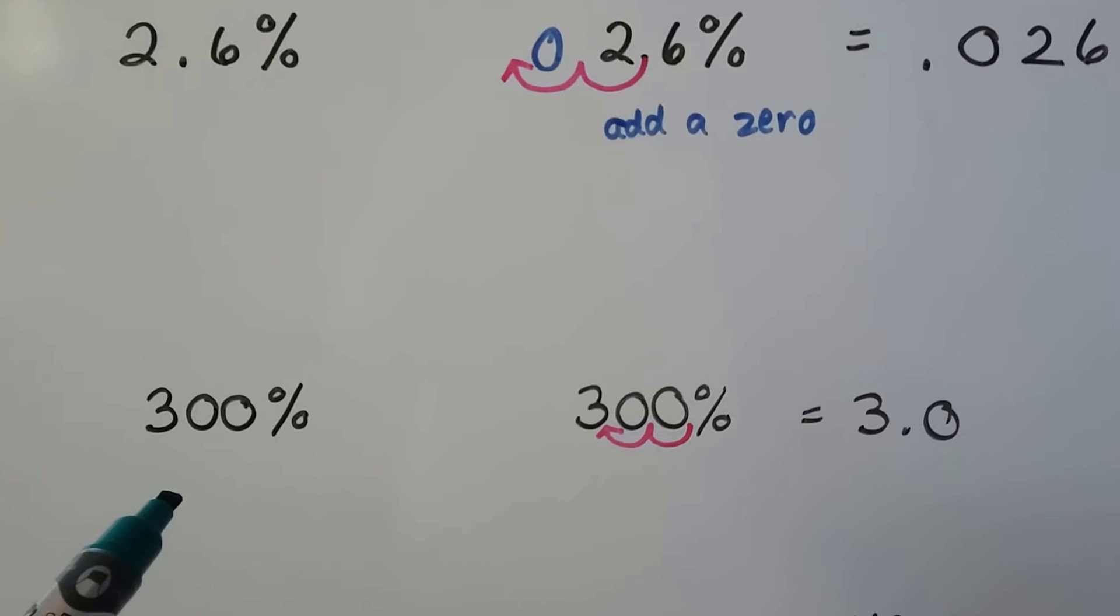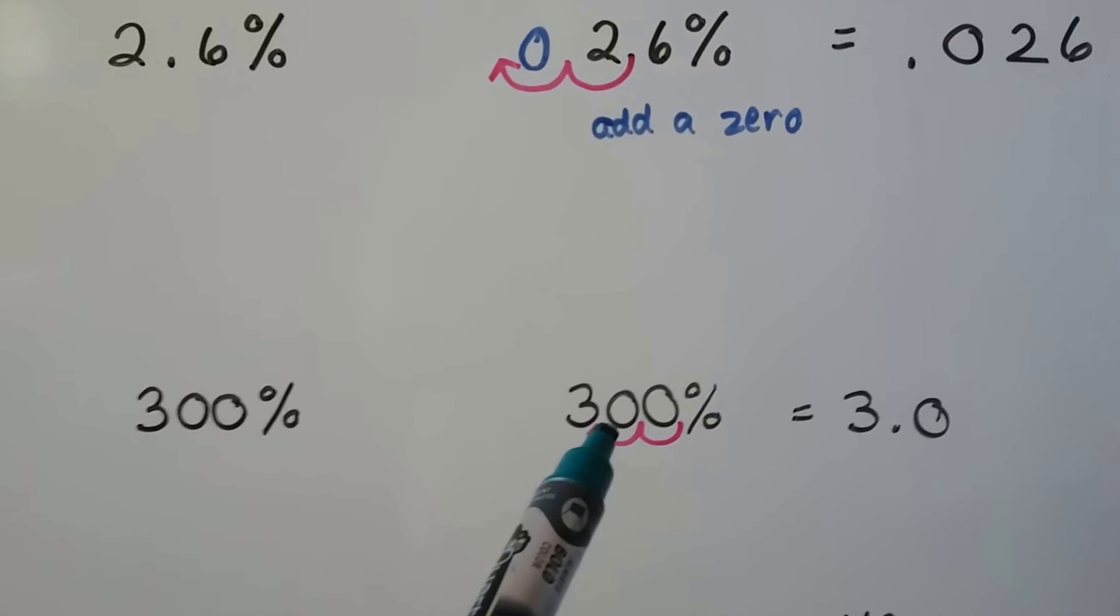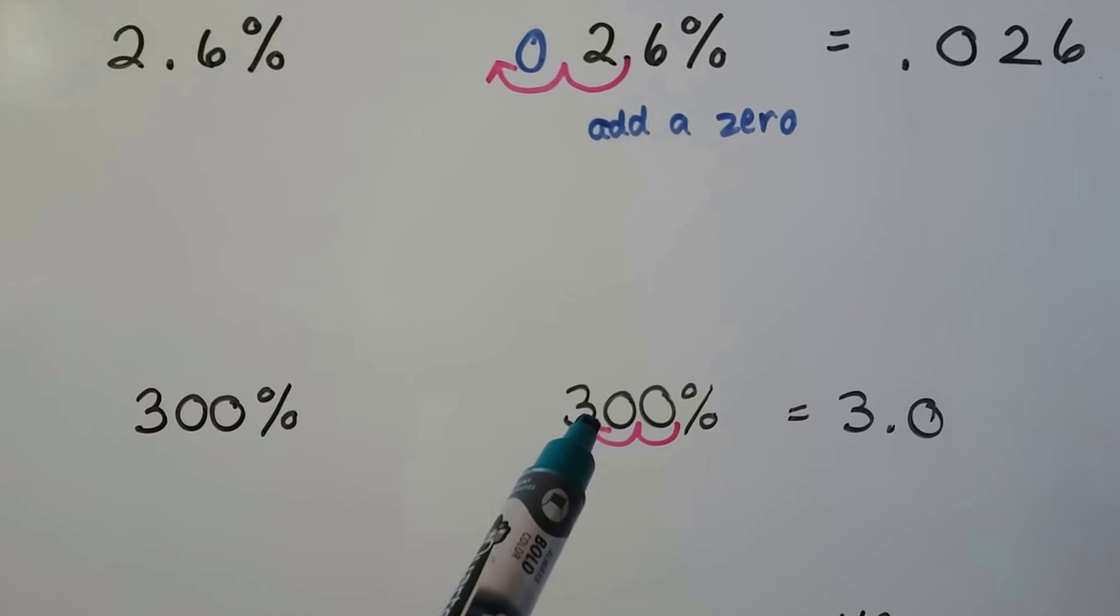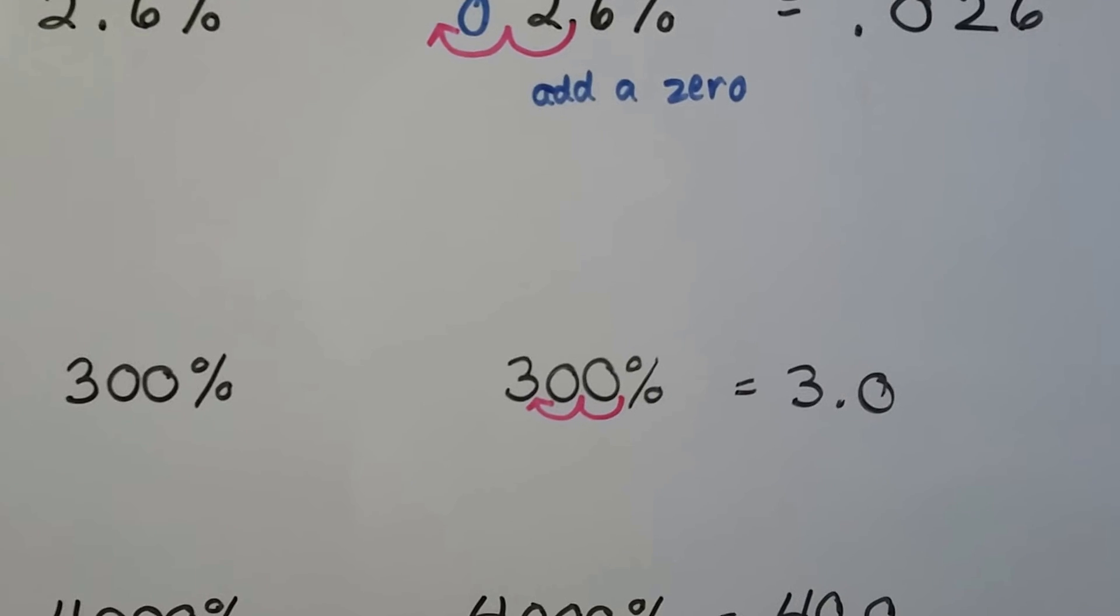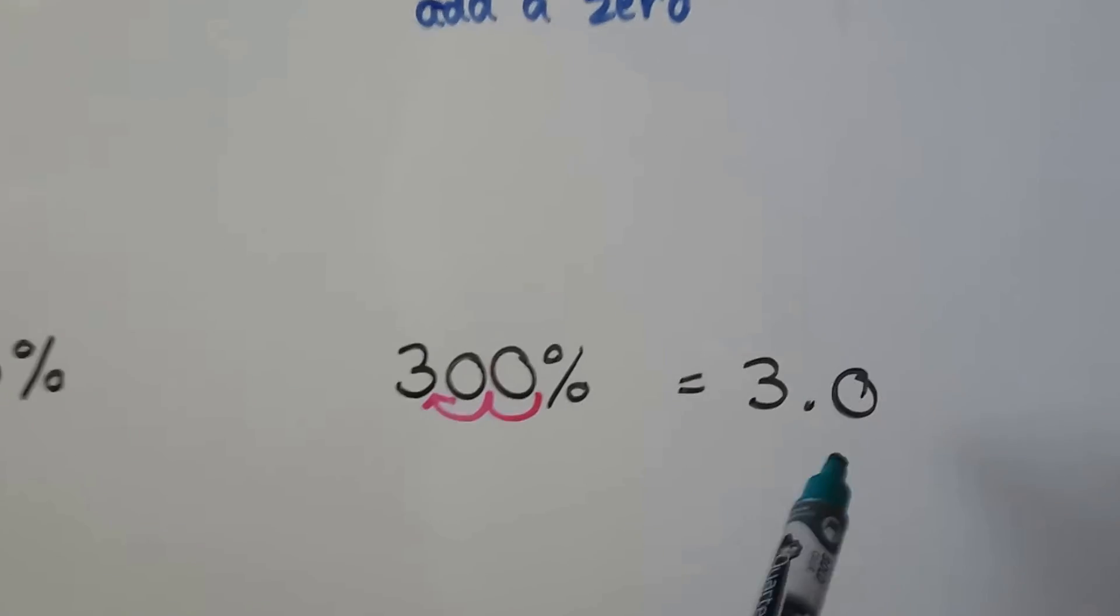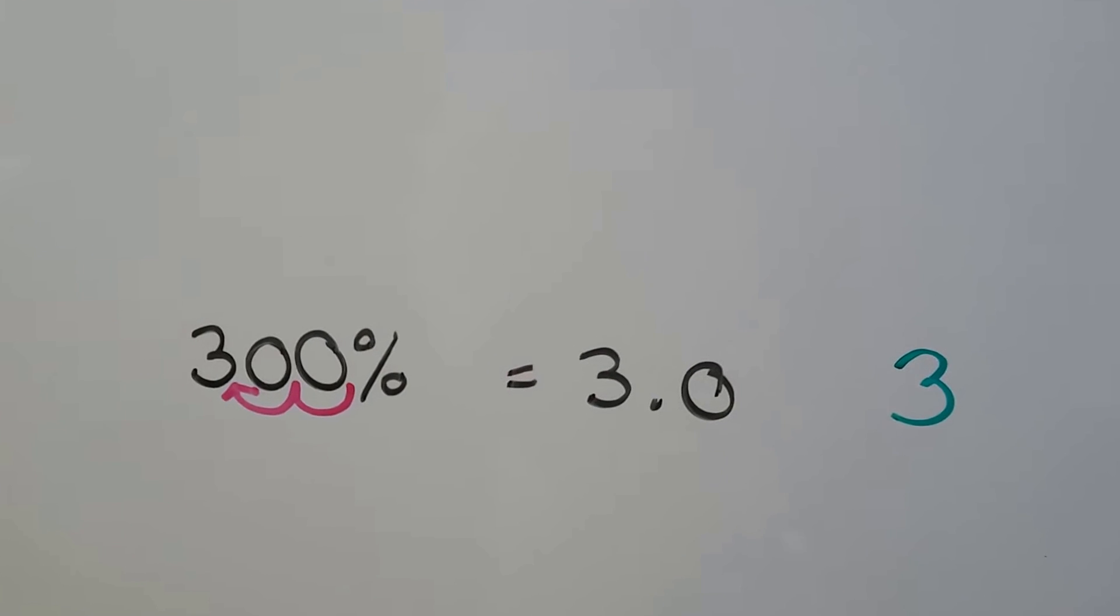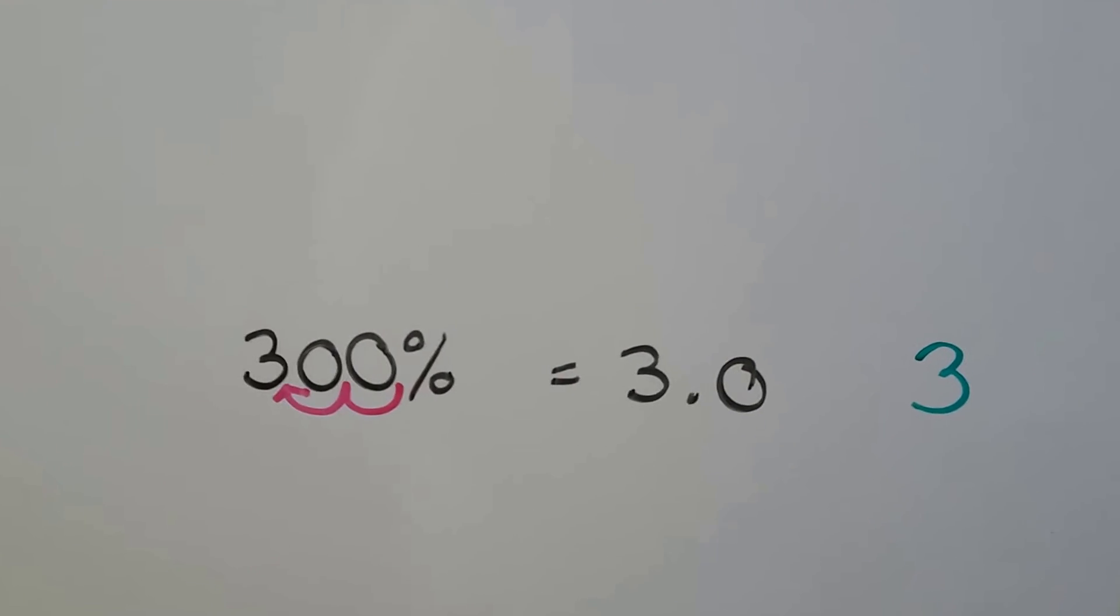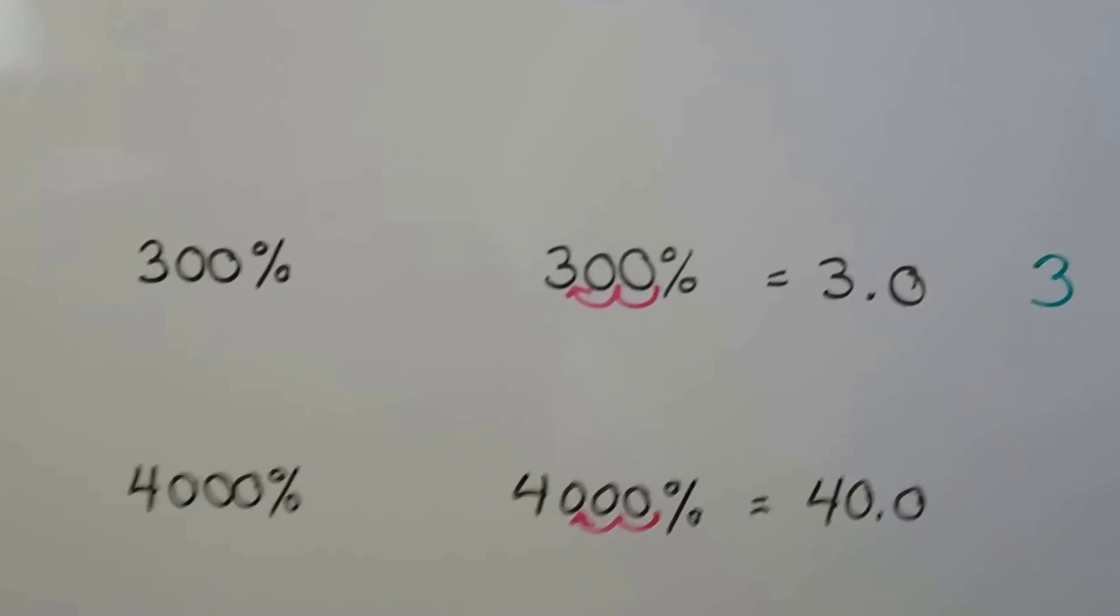For this 300%, we start from the percentage sign, and we go one, two hops. It puts it in between this three and that zero. That means we have 3.0 or three whole. Now, this is very acceptable to mean the number three. It's the same thing as just saying three. They just have a zero here for the decimal place as a placeholder. It's equivalent to three.